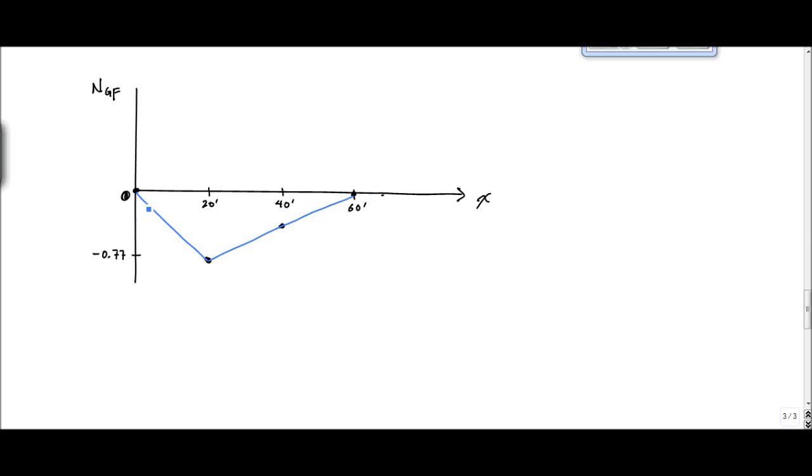So here, this blue line is the influence line for the internal force in member GF due to a moving point load, or a unit load. So when my load is at 20 feet here, I should expect it to be at minus 0.77. This right here, that number, should be minus 0.385. All right. Hopefully, you enjoyed that example problem. Let me know if you got any questions, and always keep on learning, structure-free.